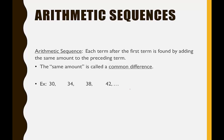So in the example 30, 34, 38, 42, we can make the assumption that this is an arithmetic sequence because we see it's going up by four. To get from 30 to 34, I would add four.